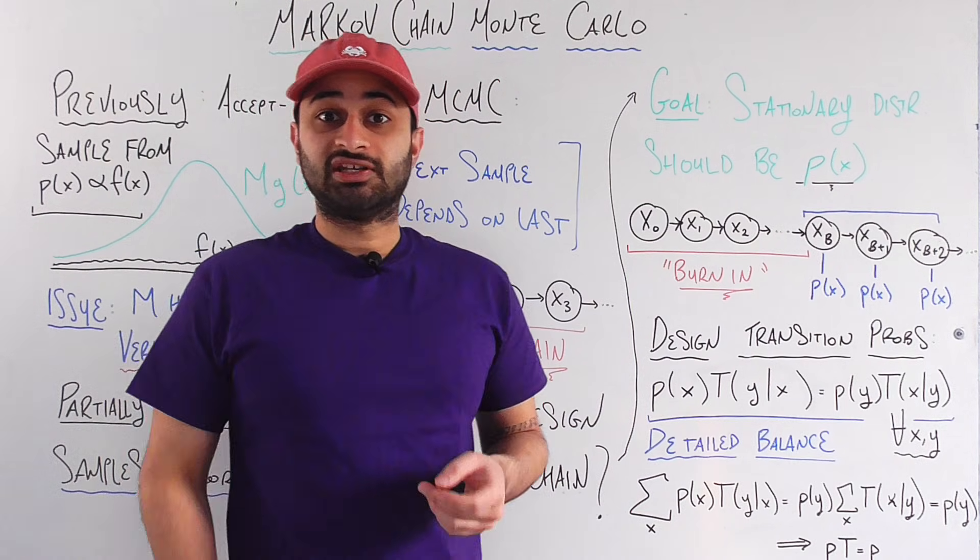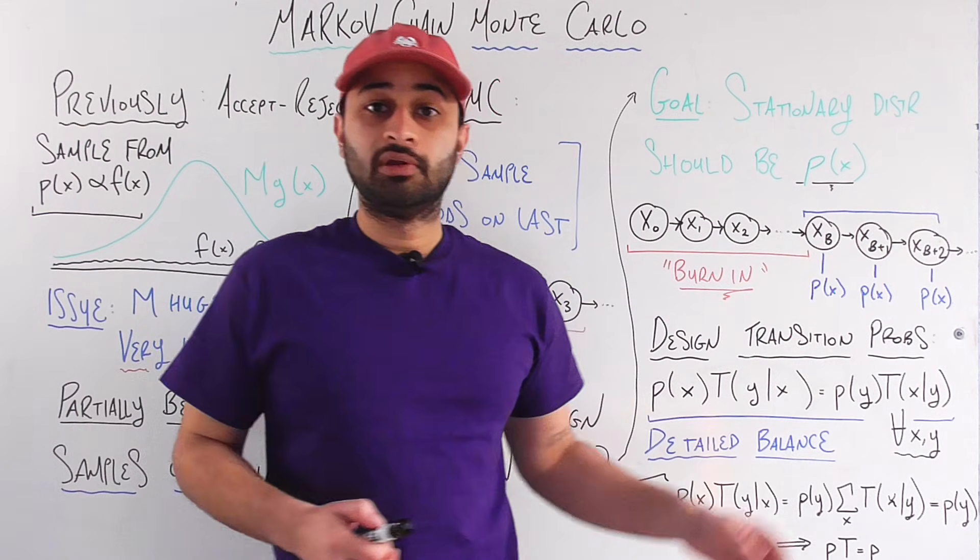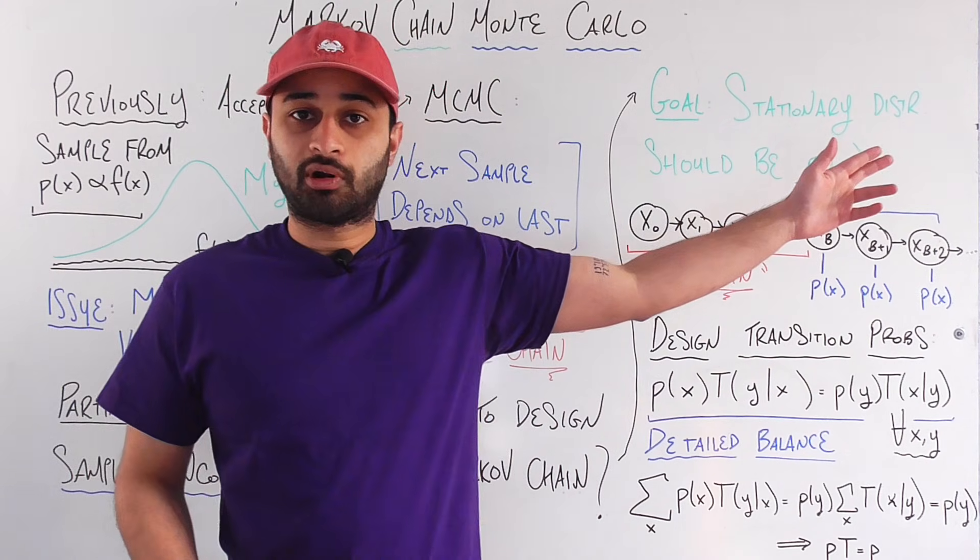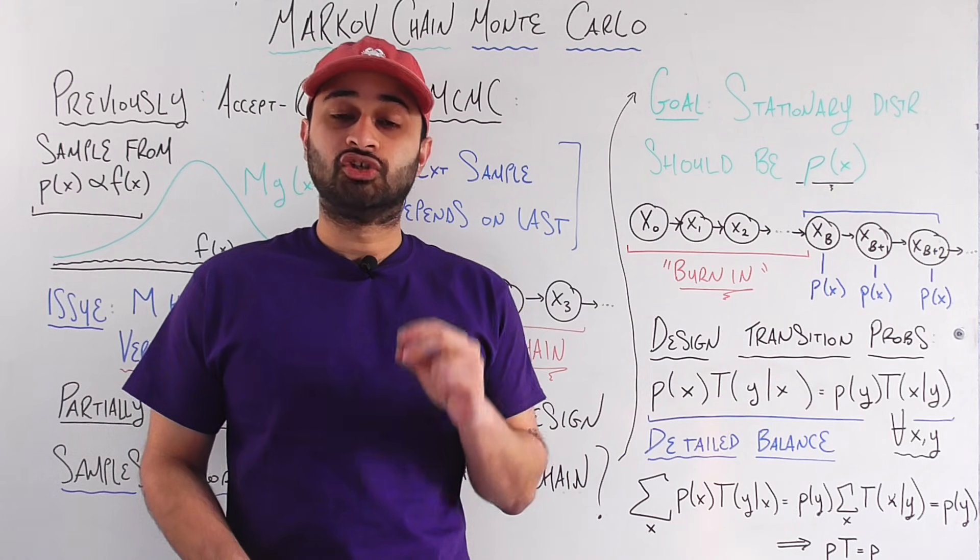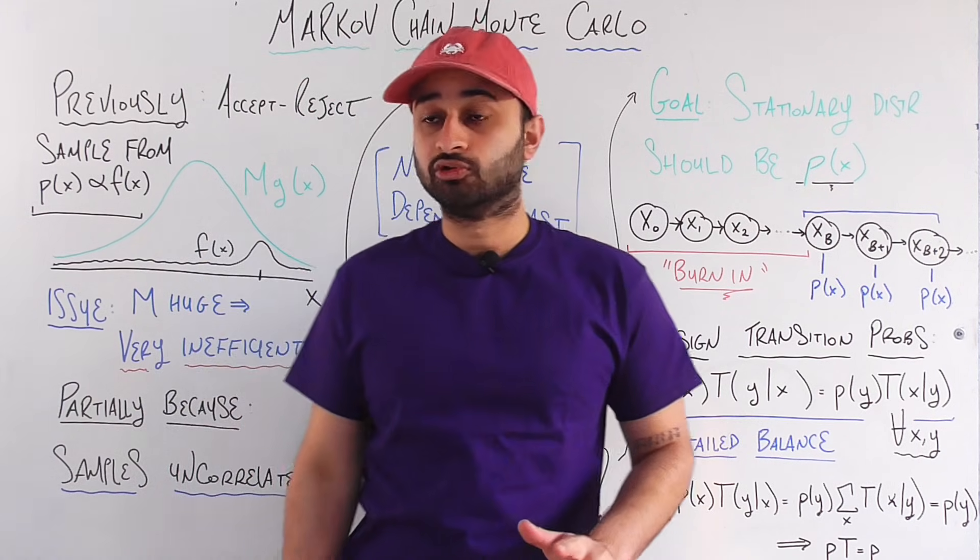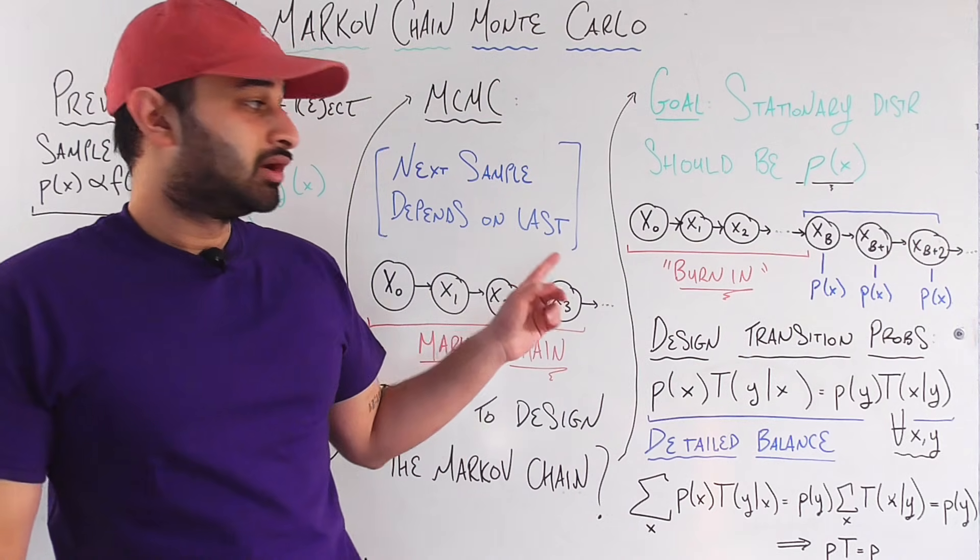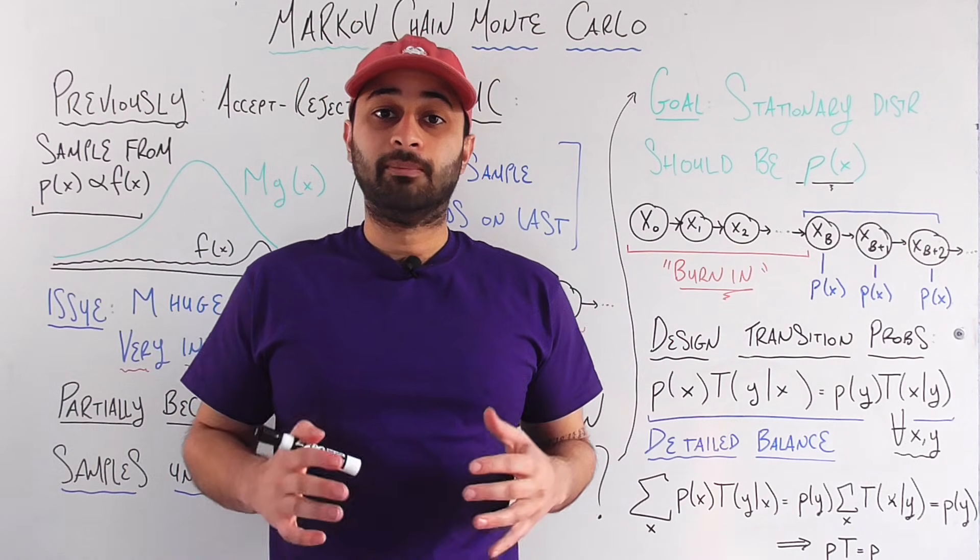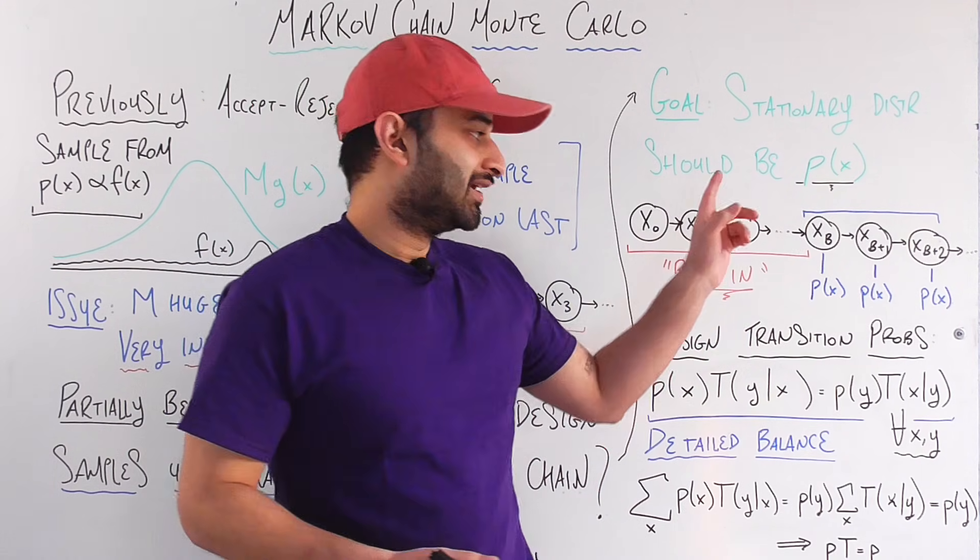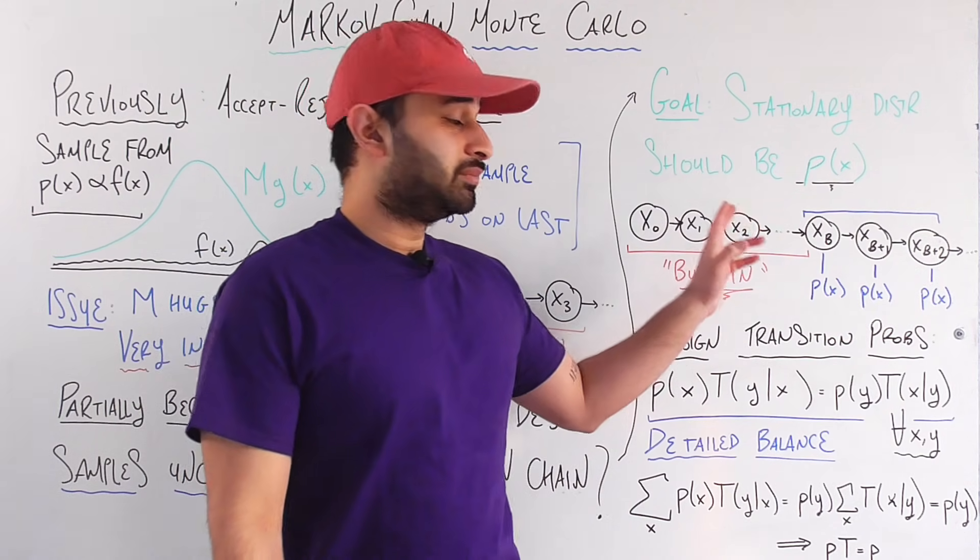Now because p of x is a stationary distribution of the Markov chain that we've engineered, that means that the next sample also comes from p of x, that means the next sample after that also comes from p of x, and every sample going forward from here on out is going to be as if it's a draw from p of x. And that is exactly what it means to sample from a distribution p of x. So at the end of the day, once we have all of these samples generated using MCMC, we throw the first many away, these are often called a burn in, and what it means is that they don't follow the distribution but they're necessary because it allows us to eventually get to the target distribution eventually. But after that burn in, we can keep all those future samples because they are all assumed to be draws from this target distribution p of x.